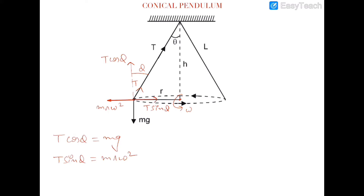If the length of the rope is l, then h equals l cos theta and r equals l sin theta. So from the equilibrium equations, T cos theta equals mg and T sin theta equals mr omega squared.